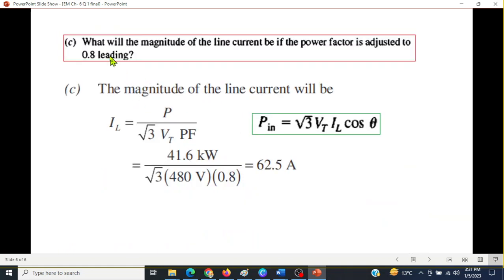Now part c is: What will be the magnitude of the line current if the power factor is adjusted to 0.8 leading? It's simple, we use this formula again. We have to calculate current now. From this formula, IL is P divided by √3 VT times power factor. The P we had calculated, VT is given, the only change here is the power factor. Power factor for this case is now 0.8 leading and so IL will be 62.5 ampere.